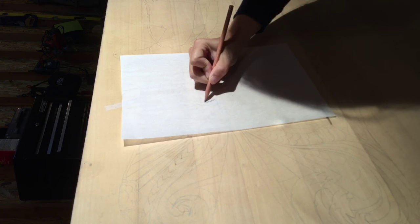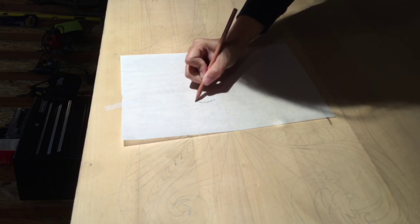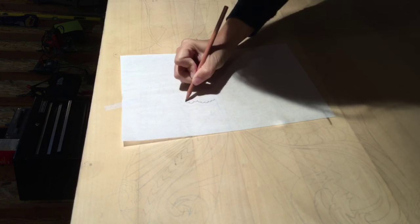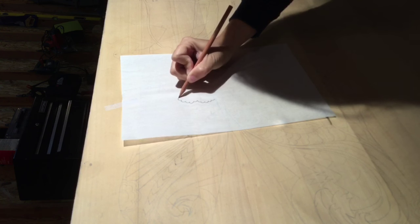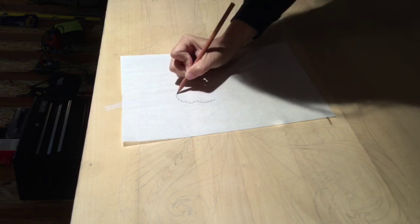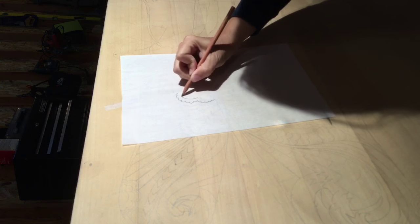And what I'm going to do is just trace over my image in bits and pieces because I don't have tracing paper that's big enough to fit all of this.